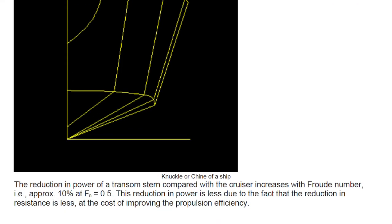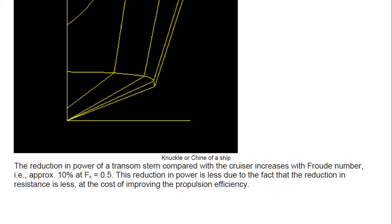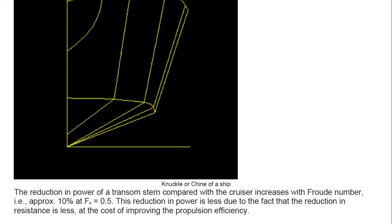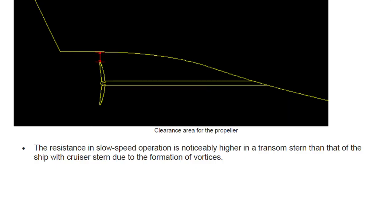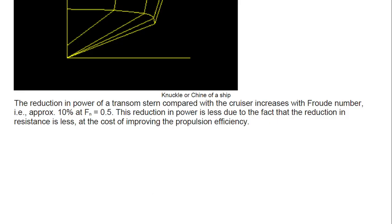The reduction in power of a transom stern compared with a cruiser stern at a Froude number of approximately 0.5 is about 10 percent. This reduction in power is less due to the fact that the reduction in resistance is less, but it is achieved at the cost of improving propulsion efficiency — which comes from the clearance gap between the stern and the propeller.